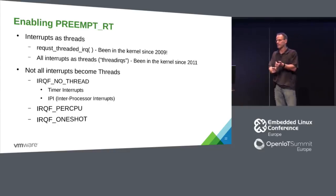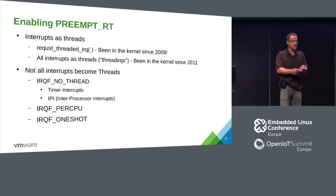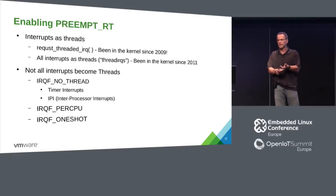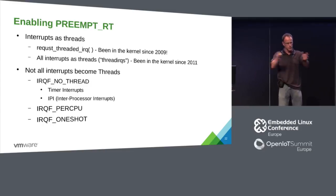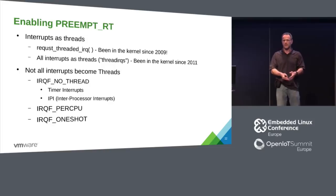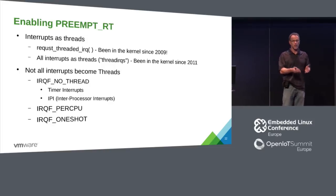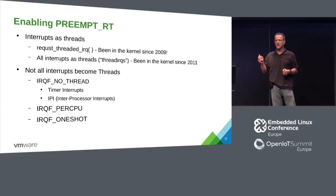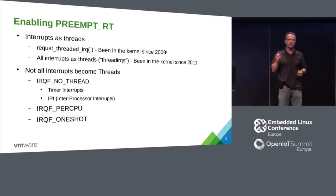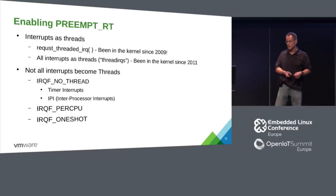Lockdep came from the real-time patch. Mutex came from the real-time patch. Generic IRQs — making all the IRQ systems core architecture — came from the RT patch, because we couldn't do RT without it. People liked the code because it made things cleaner. Real-time patch requires clean code, so our gifts are cleaning up code for everyone.